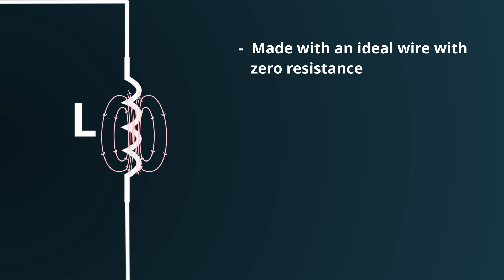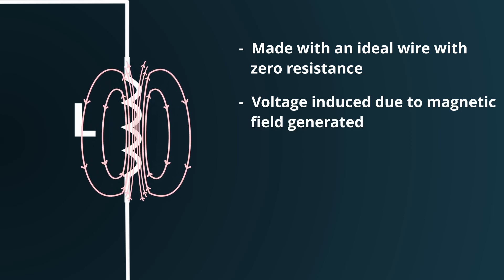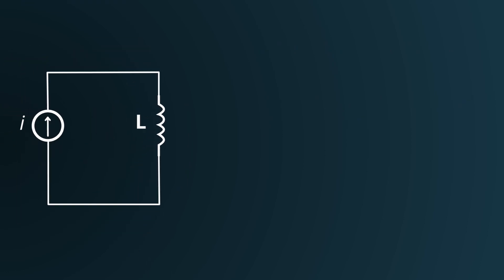This phenomenon is related to the changing magnetic fields when current flows through the wire. We've delved into the foundational mechanics of an inductor in a previous video, so if you're curious about the details, I'd recommend giving that a watch. That said, the voltage across an inductor can be determined using this equation.